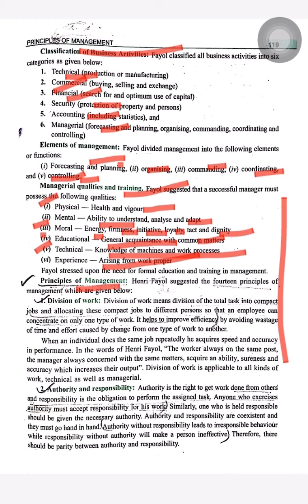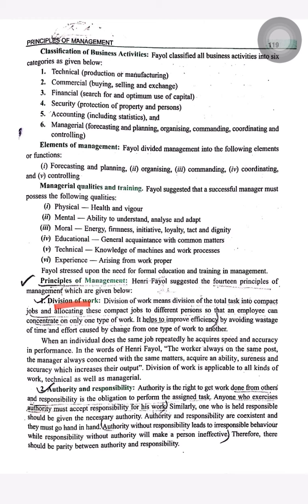Henry Fayol suggested 14 principles of management — this is very important from an examination point of view. First, Division of Work: the manager should divide the work among the employees. Second, Authority and Responsibility: the management should assign authority and responsibilities to each and every employee.